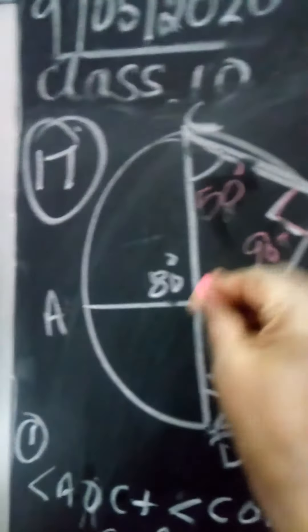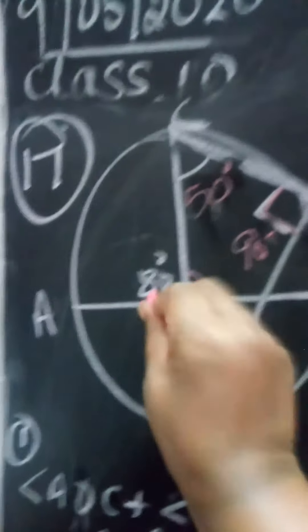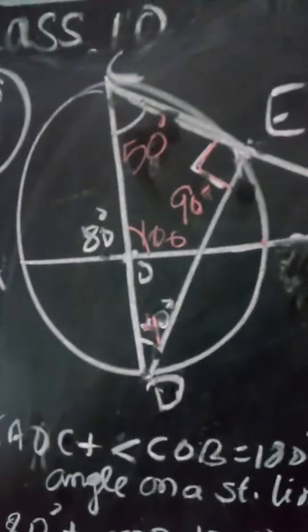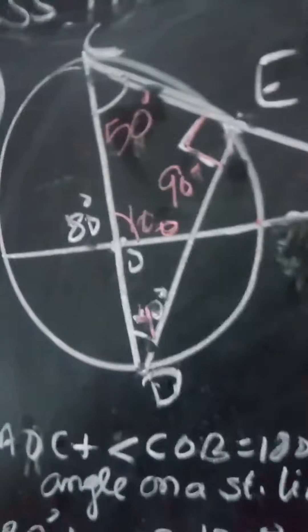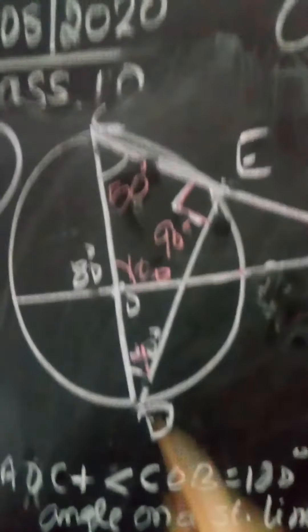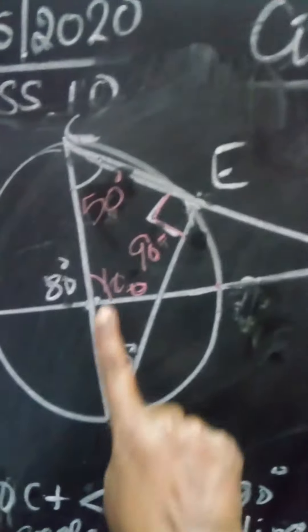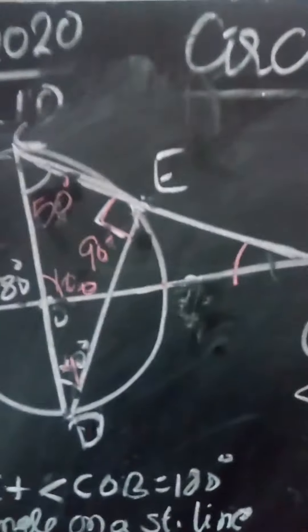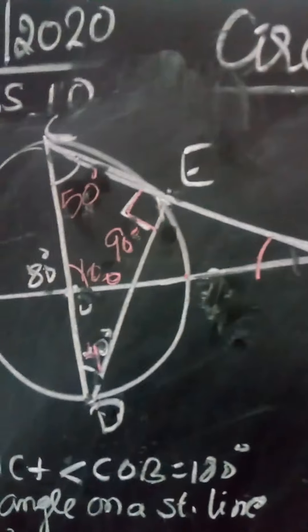Next, this is a straight line — this is 80 degrees, so these two will be adjacent angles. If this is 80, this will be 100. Now in triangle COB, this is 50, this is 50, and this is 100.